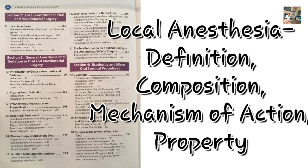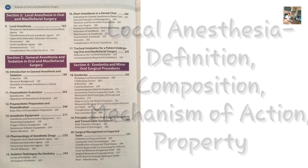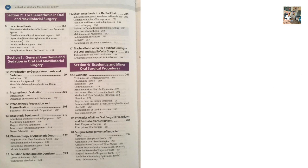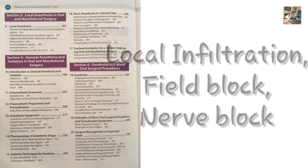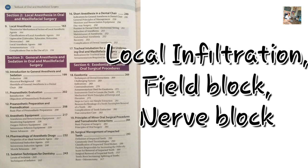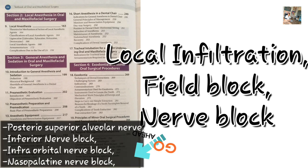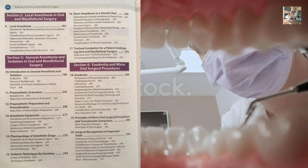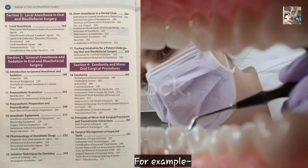In the exam, local anesthesia (LA) comes as a long question — definition, composition, mechanism of action, properties, and toxicity of LA. Toxicity of LA also comes as a separate short question. In viva, we can be asked about local infiltration, field blocks, nerve blocks — including posterior superior alveolar, inferior alveolar, infraorbital, and nasopalatine nerve blocks. LA is asked most often in chair-side viva, so it is very important.